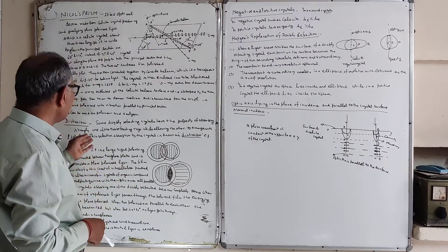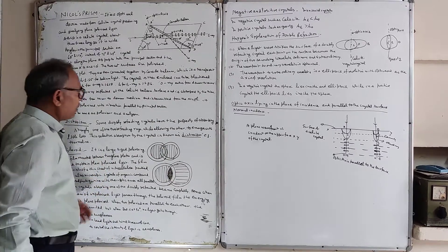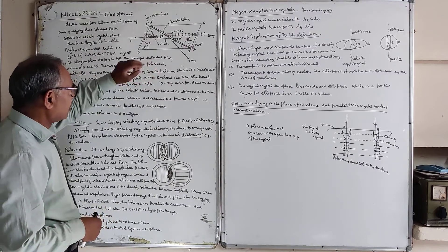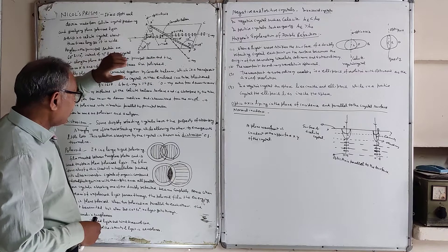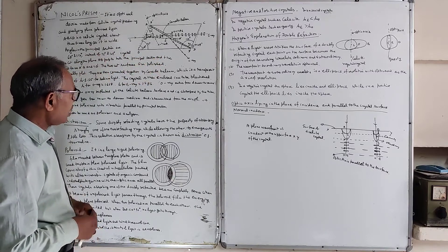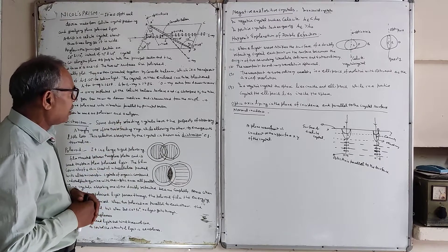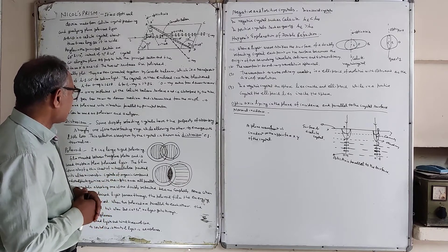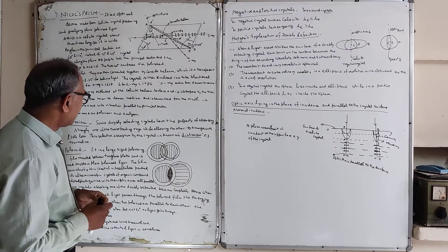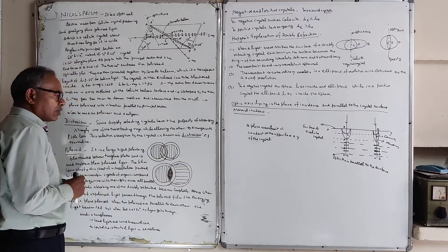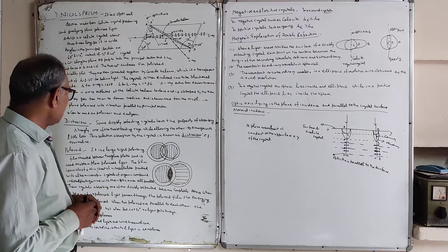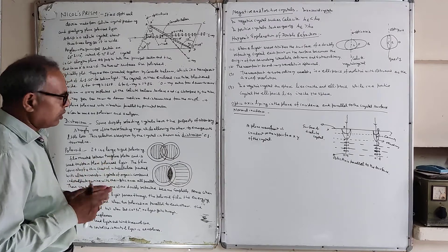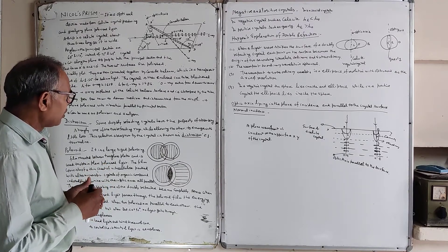Now we come to dichroism. Some doubly refracting crystals have the property of strongly absorbing one of the two refracted rays while allowing the other to emerge with little loss. This selective absorption by the crystal is known as dichroism. An example is tourmaline, which absorbs one ray and allows the other to pass through.